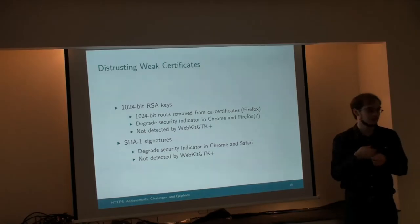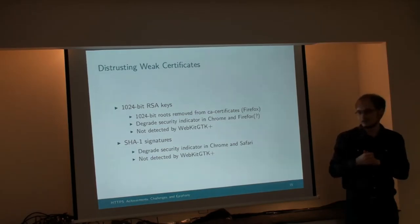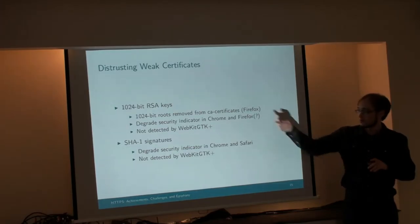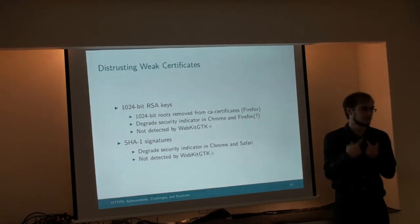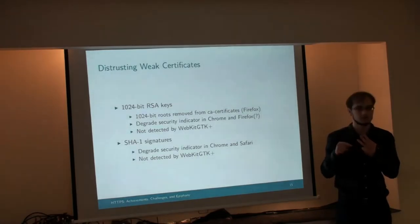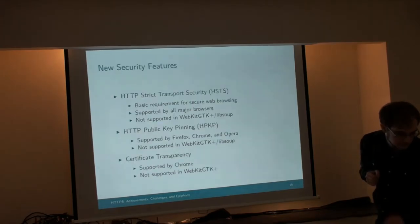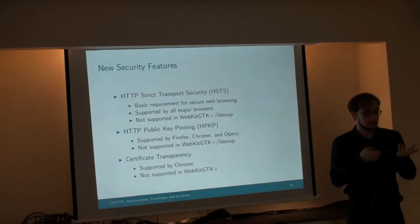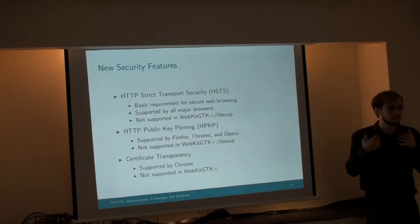SHA-1 signatures on certificates are no longer secure. Chrome and Safari are detecting these now, but WebKitGTK is not detecting them yet — same problem as 1024-bit RSA certs. It needs work in GLib Networking, GLib, and LibSoup — we need new API in all three places or we can't detect these. Those will be projects for us in the future. But these are achievements — the other browsers are more secure now, and hopefully WebKitGTK will be too.